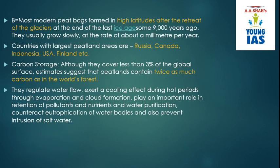Most modern peat bogs formed in high altitudes after the retreat of glaciers. The countries with the largest peat lands are Russia, Canada, Indonesia, USA and Finland. Regarding carbon storage — though peat lands are small in area, they store twice as much carbon as all the world's forests combined.